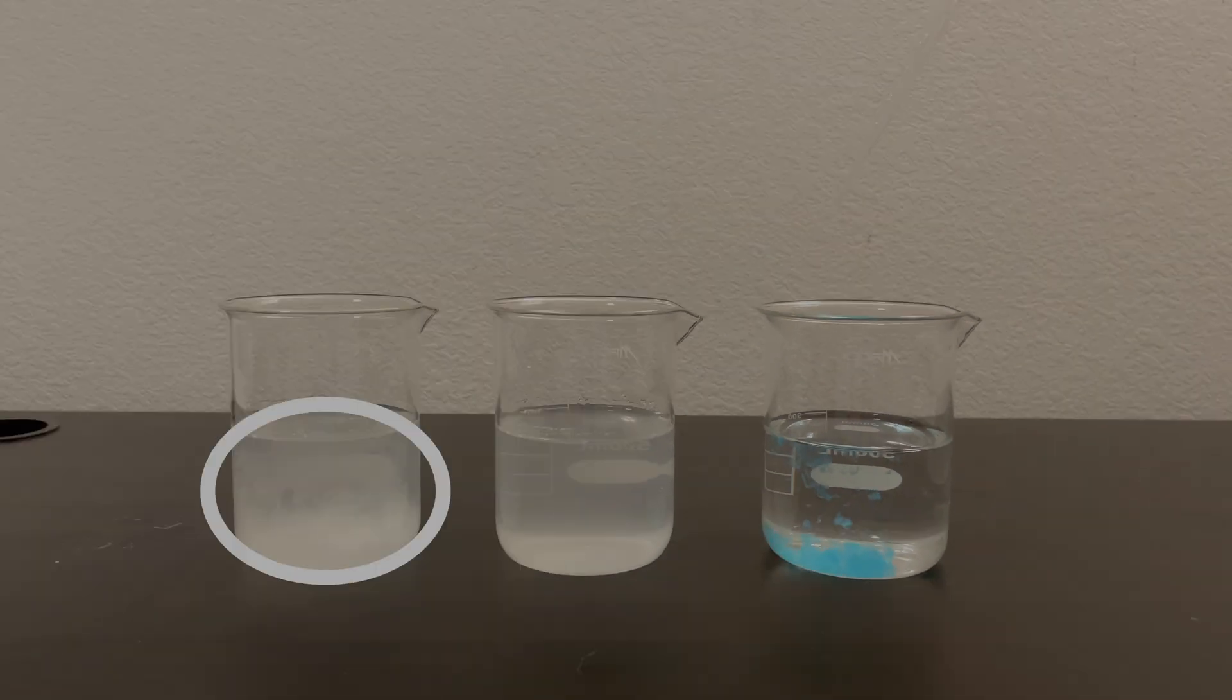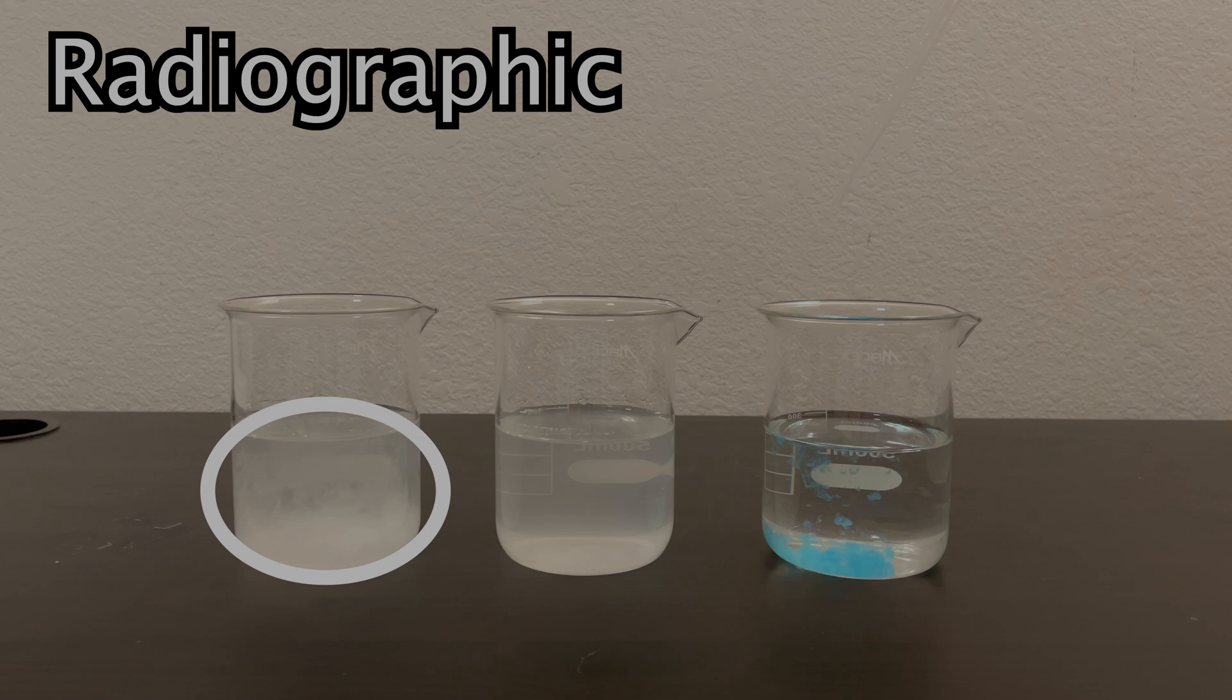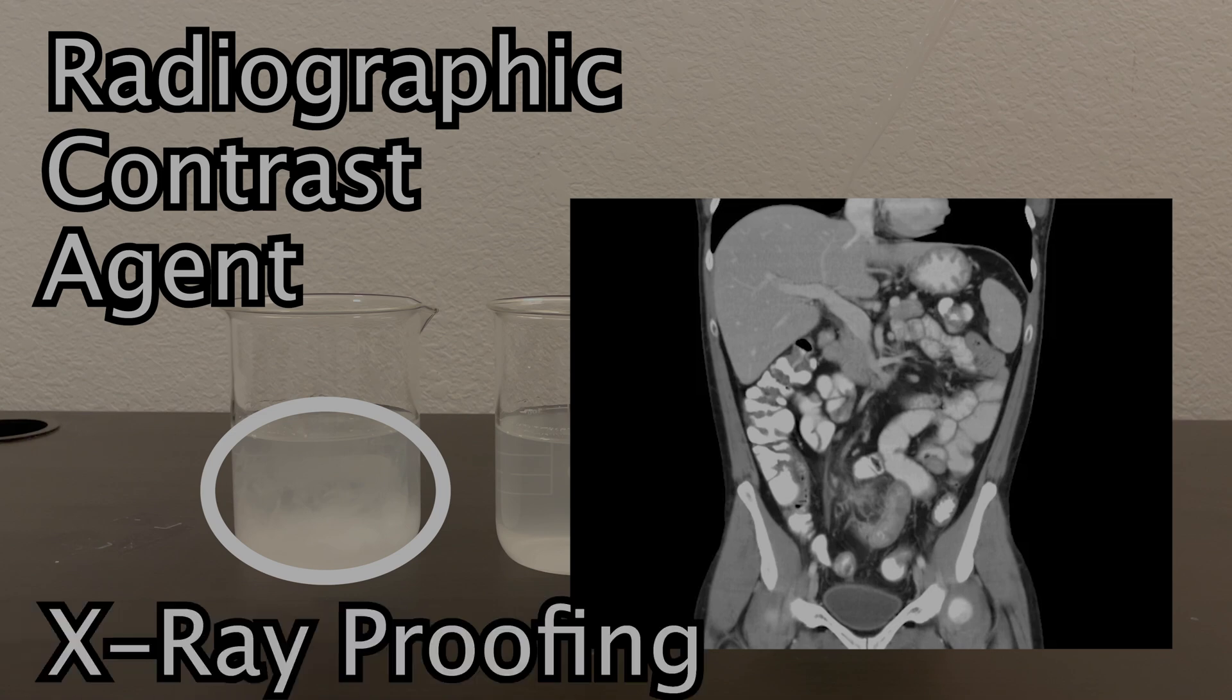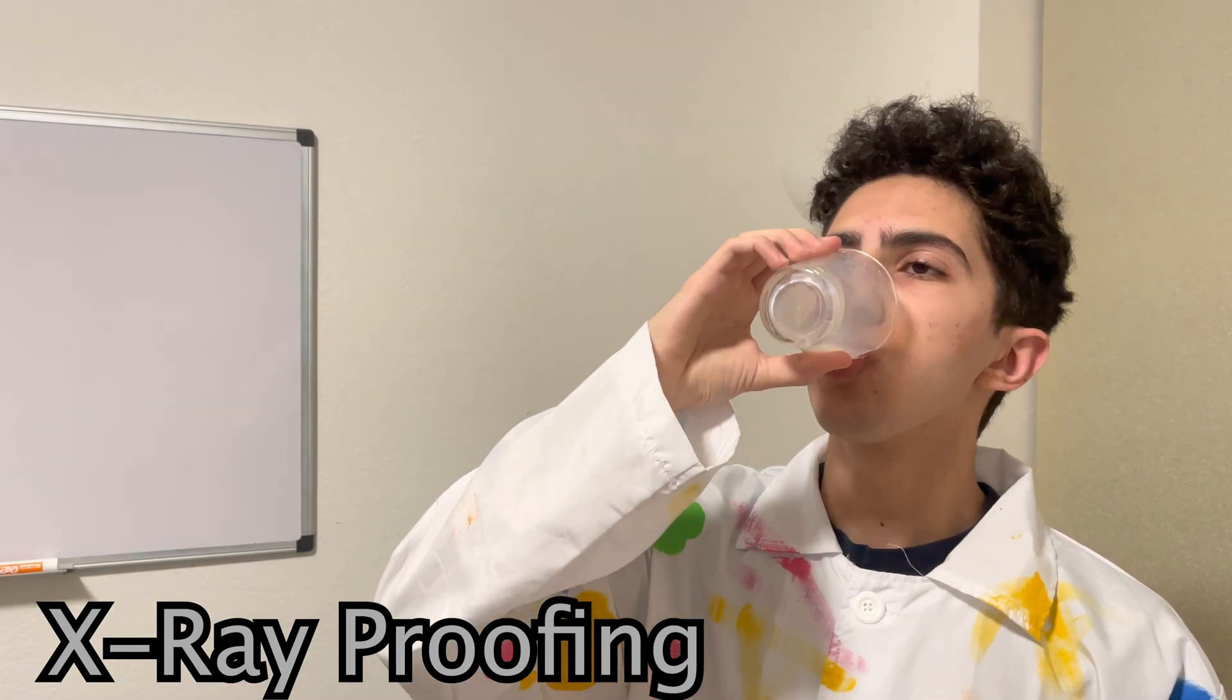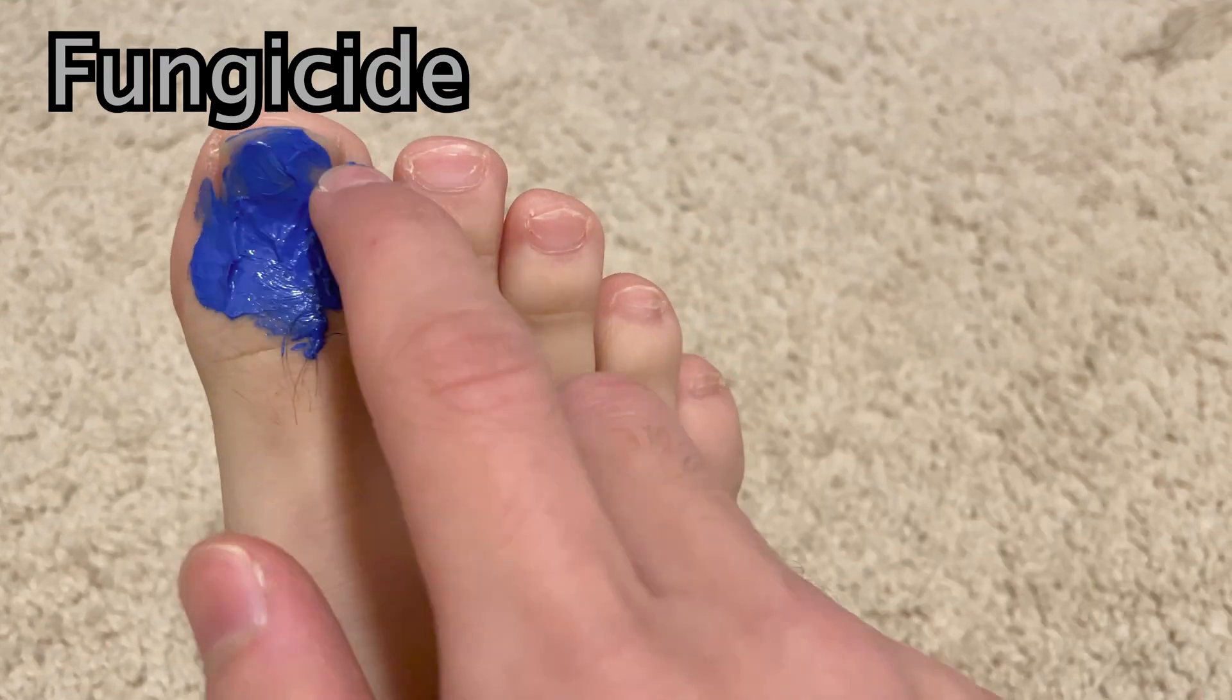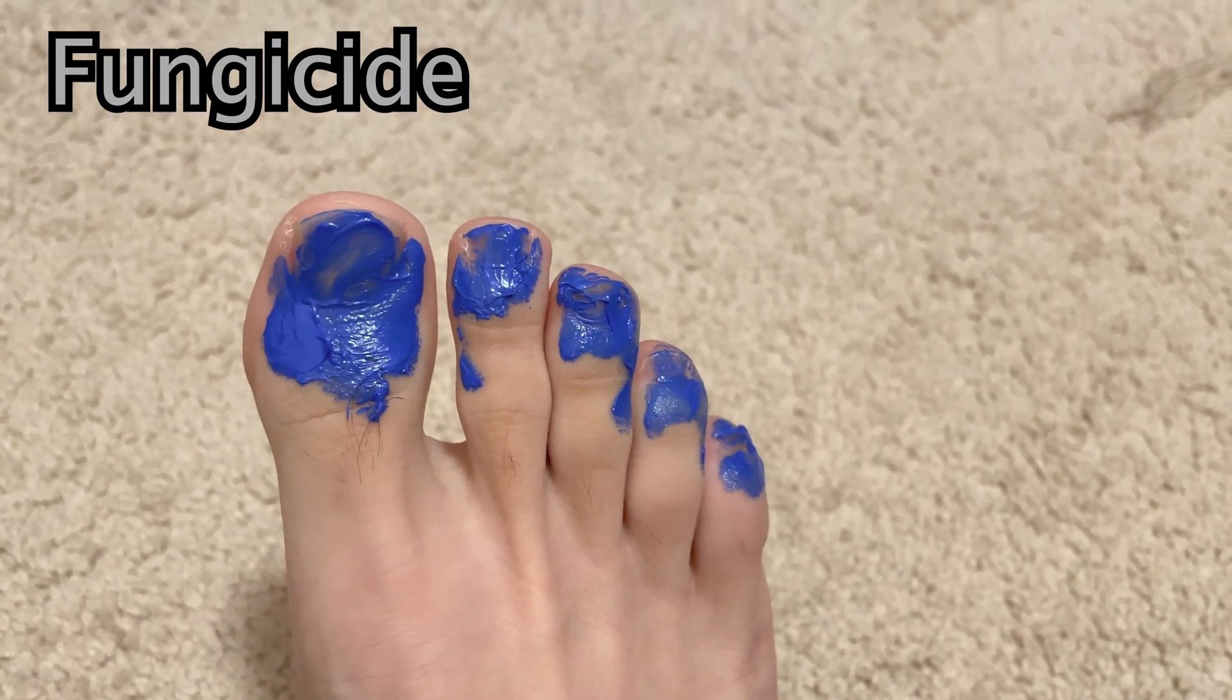Now, this white precipitate is actually a radiographic contrast agent, meaning it's used to enhance CT scans since it shows up better under x-rays. So to become x-ray proof, I drank some of it. This blue precipitate has historically been used as a fungicide, so I rubbed some of it on my feet to cure my foot fungus.